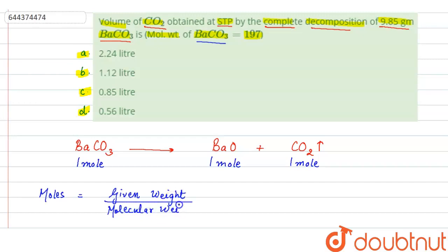By using this formula we can calculate the number of moles. Given weight of barium carbonate is 9.85 gram and molecular weight is given as 197 gram per mole. So here the number of moles comes out to be 0.05 mole.